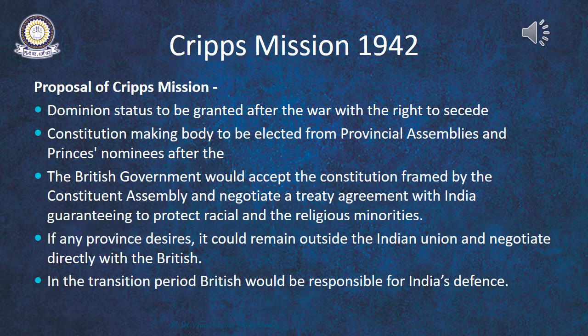The first provision of the Cripps Mission was Dominion status to be granted after the war, with the right to secede — meaning any province could, if it so desired, remain outside the Indian Union and negotiate directly with Britain. Second, a constitution-making body was to be elected from provincial assemblies and princely states after the war. Third, the British government would accept the constitution framed by the constituent assembly and negotiate a treaty to protect racial and religious minorities. Fourth, if any province desired, it could remain outside the Indian Union and negotiate directly with Britain. And lastly, in the transition period, the British would remain responsible for India's defense.